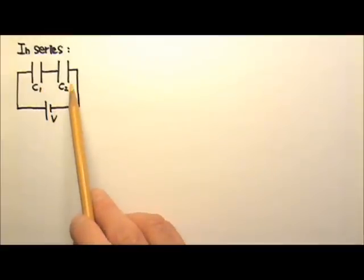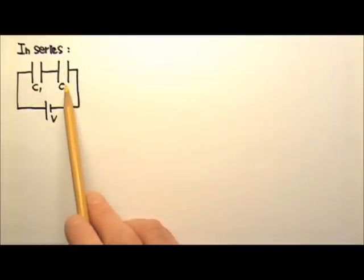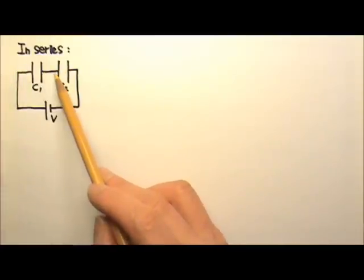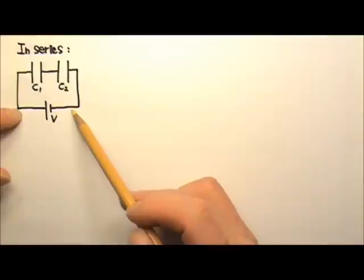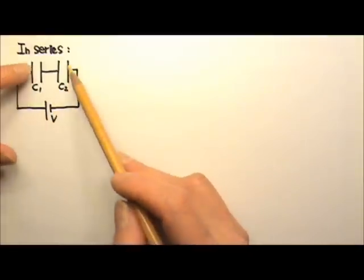We say that these two capacitors are connected in series. When two components are connected in series, they have one end connected together, while the other end is not. See here, we have a battery in between these two ends.